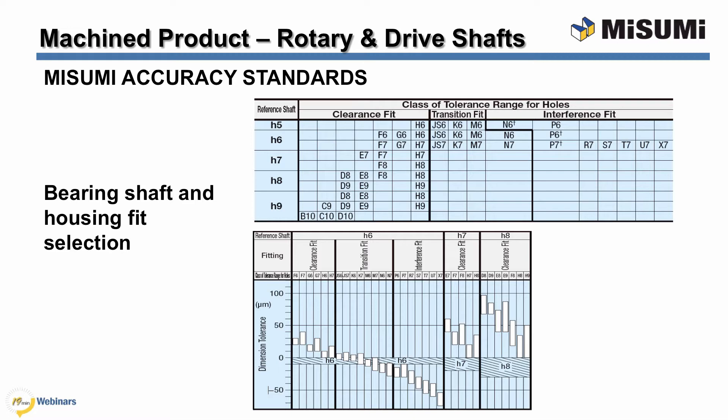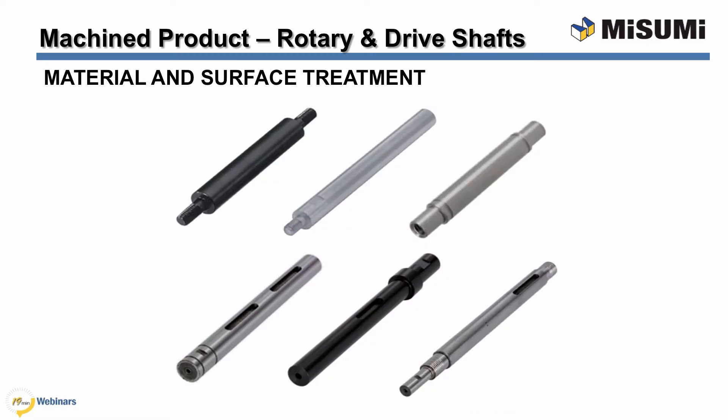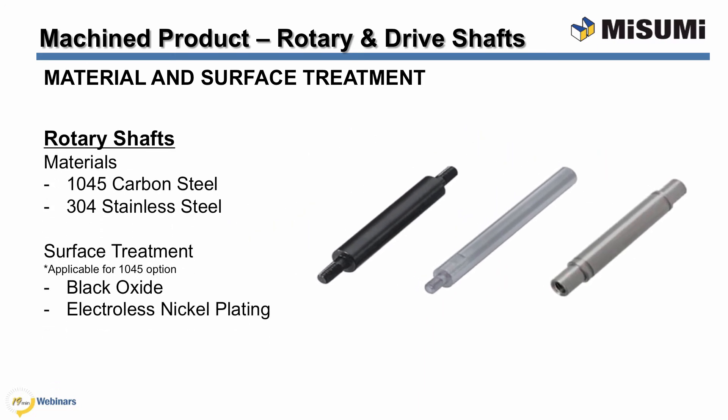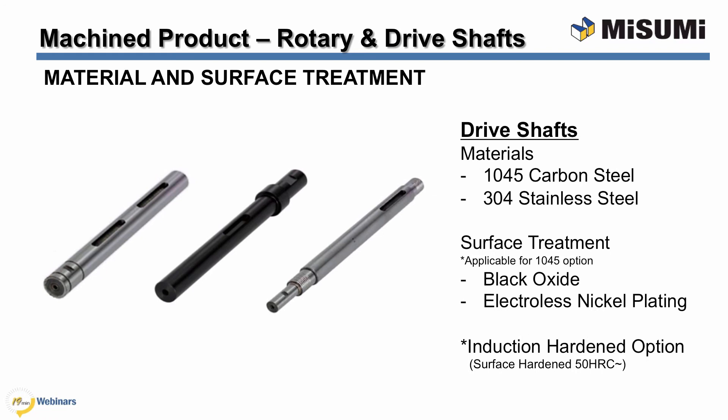Now let's take a look at our rotary shaft options. Misumi offers rotary and drive shafts in a variety of different material options. Rotary shafts are offered in 1045 carbon steel and 304 stainless steel. The 1045 carbon steel option must be selected with a black oxide or electroless nickel plating surface finish. The 304 stainless steel option does not have a surface treatment option available. Likewise, Misumi drive shafts are also offered in 1045 carbon steel and 304 stainless steel, with the same surface treatment requirements and restrictions.